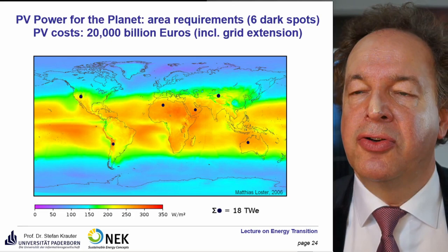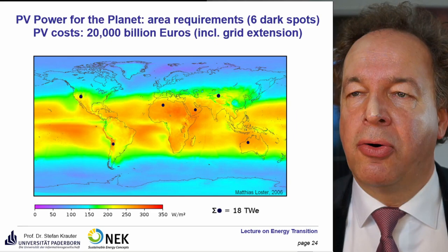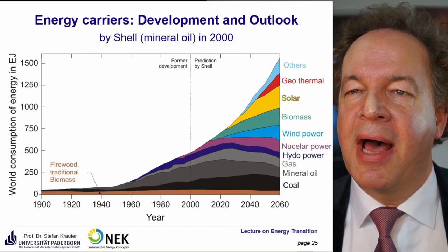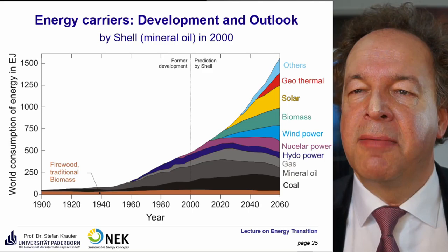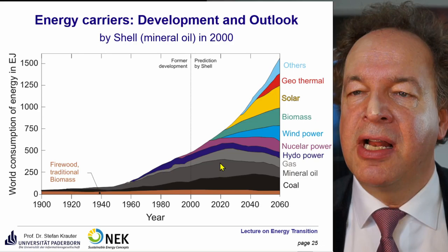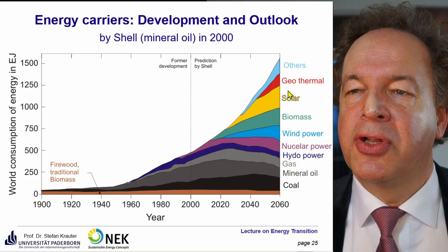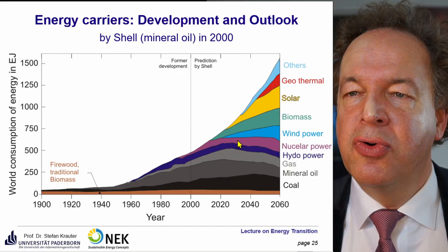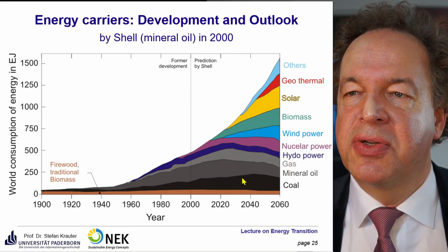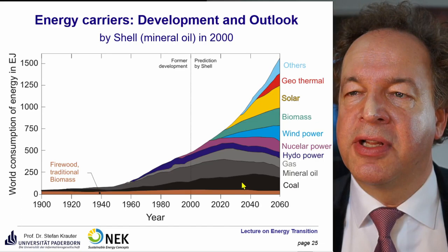Distributing solar plants globally balances differences in irradiation — day and night and seasonal changes — especially by placing some on the southern hemisphere. Interestingly, a Shell prediction from 2000 showed that mineral oil would peak around 2020 and decline, while renewables would increase significantly. Even a fossil fuel company didn't see a big future for fossil fuels.